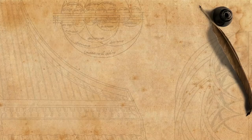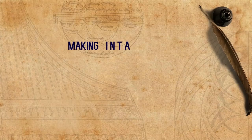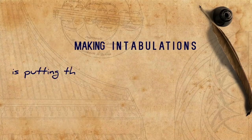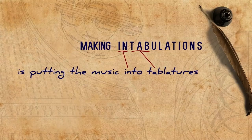In order to inspect the music, we have to make an open score out of the separate parts. But as we said, this was not done so often. A common procedure done by instrumentalists was to prepare intabulations from the different parts, using different kinds of notation systems. Practically speaking, making intabulations is putting the music into tablatures.